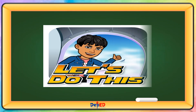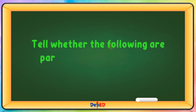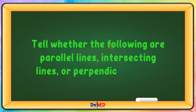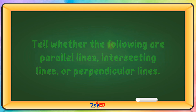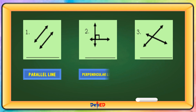Let's do this. Tell whether the following are parallel lines, intersecting lines, or perpendicular lines. The first picture is a parallel line. The second picture is a perpendicular line. The third picture is an intersecting line.